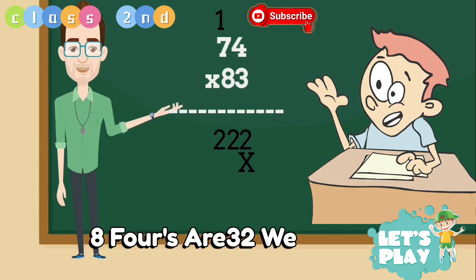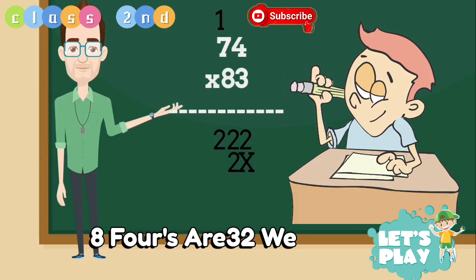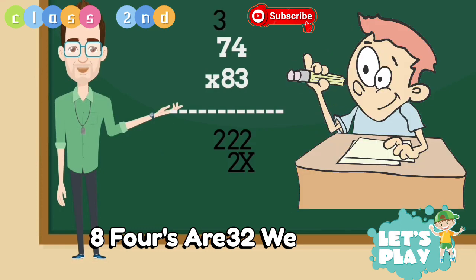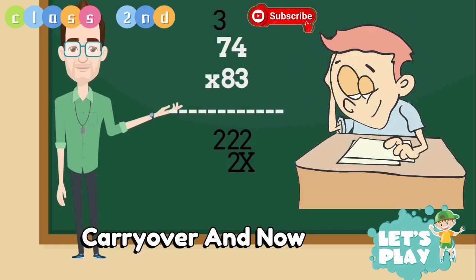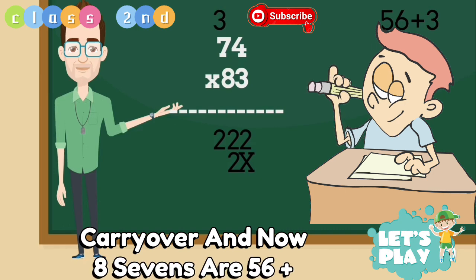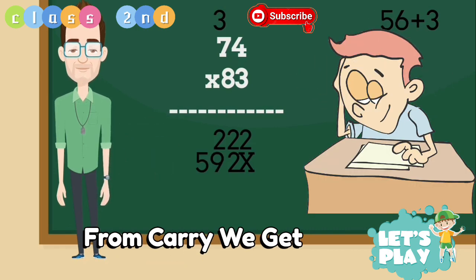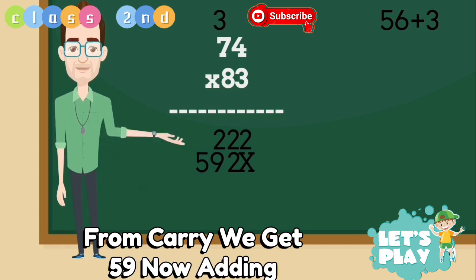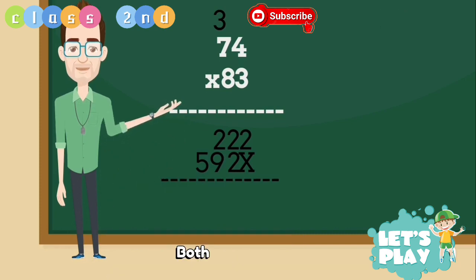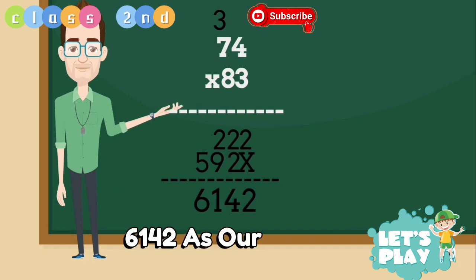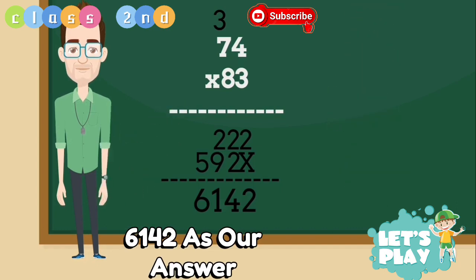Now move to 8. 8 4's are 32. We write 2 down and 3 carry over. And now 8 7's are 56 plus 3 from carry, we get 59. Now adding both we get 2, 4, 11, 1 carry over, and 6. 6142 as our answer. Is it clear?